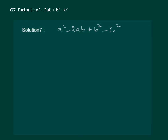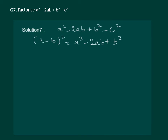Let us read the question on the slide: Factorize a squared minus 2ab plus b squared minus c squared. We observe that the first three terms of this expression are identical to the identity a minus b whole square. We have a minus b whole square equals a squared minus 2ab plus b squared.